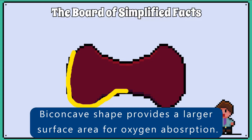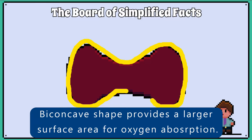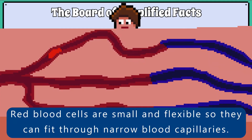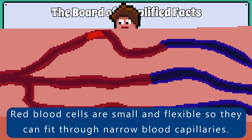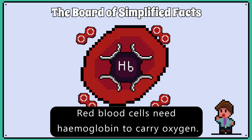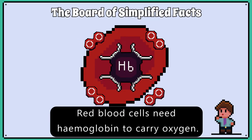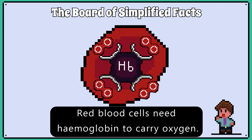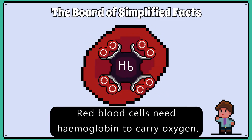This biconcave shape provides a larger surface area for oxygen absorption, and red blood cells are flexible and small so they can fit through narrow blood capillaries. They also contain haemoglobin, which is an iron-containing molecule that enables a red blood cell to carry oxygen.